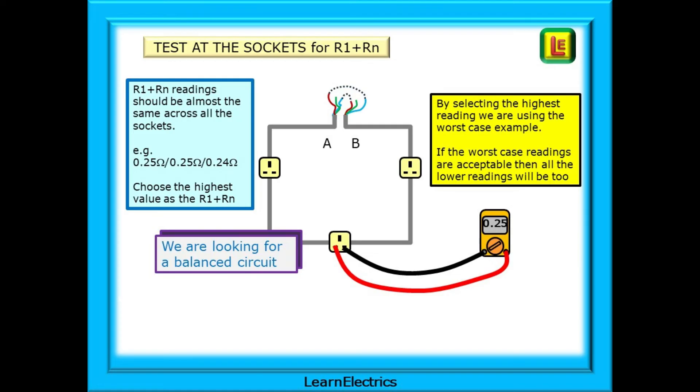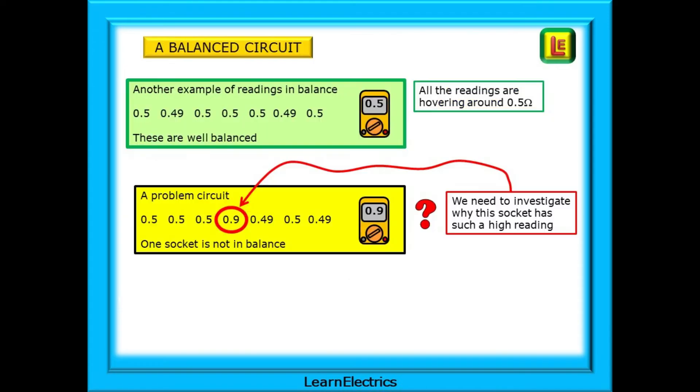We are looking for a balanced circuit. If all the readings are the same, within a very small margin of tolerance, then we can be fairly confident that all is okay with the circuit so far. Another example, and with readings in balance, is shown in the green box. All the readings are hovering around 0.5 ohms. Nothing to worry about here.